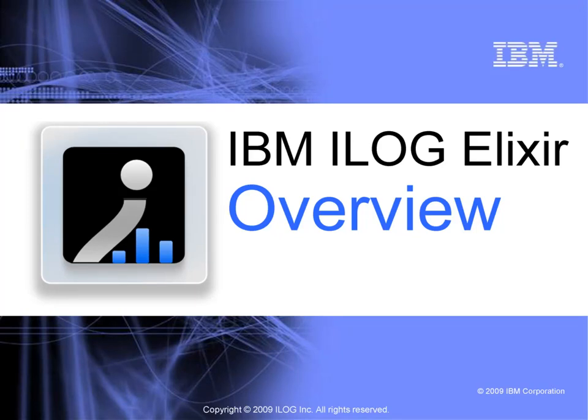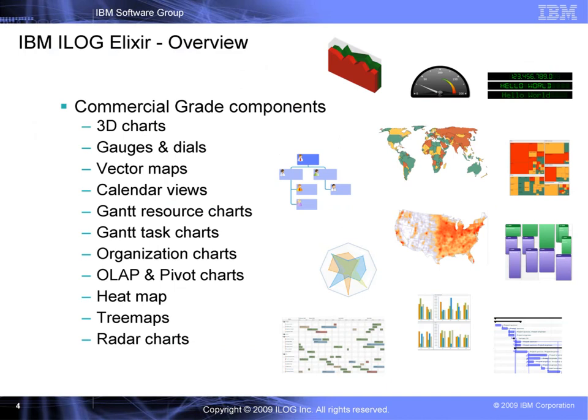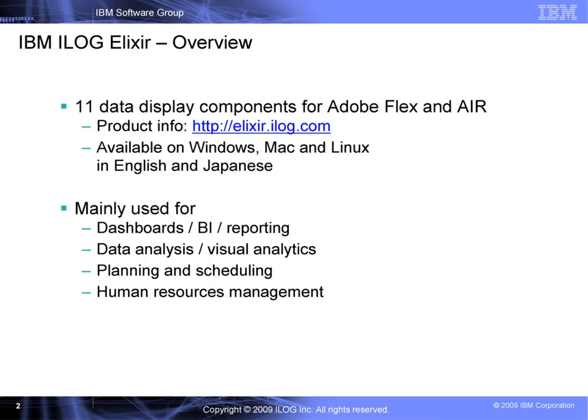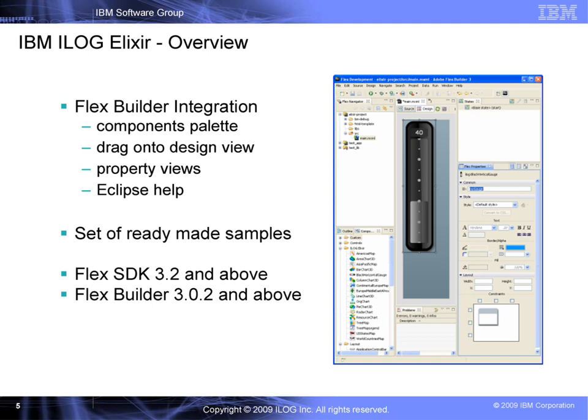Welcome to this IBM iLog Elixir overview video. Elixir has a set of 11 data display components for the Adobe Flex 3 and Air platforms, meant to be used by developers to create custom applications. We deliver installers for the Windows, Mac and Linux operating systems. Elixir is available both in English and Japanese and can be localized to any other language. Before we look at features, let me cover important information.